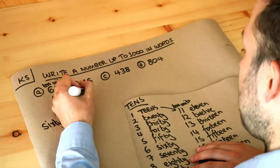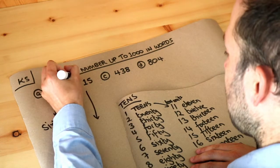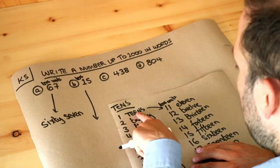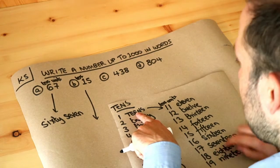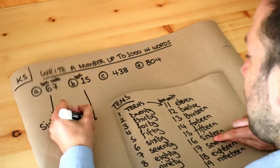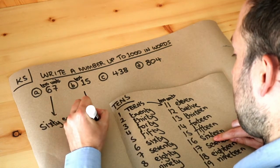What about B? Now the tens digit is one. Ah, this is one of those special cases. So if the tens digit is one we have a number of the teens, and then let's look at the units digit here. It's five, so we have fifteen. So we say this number as fifteen.